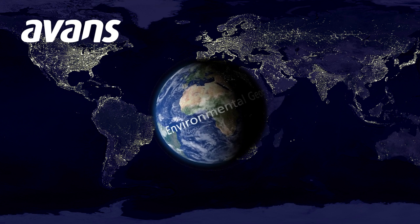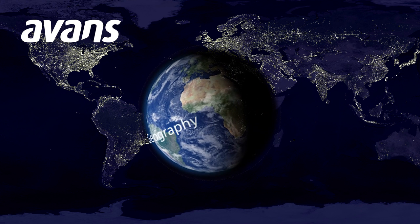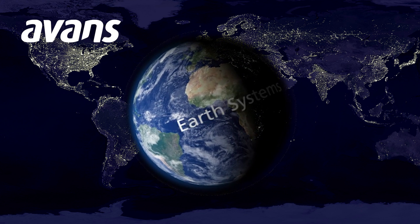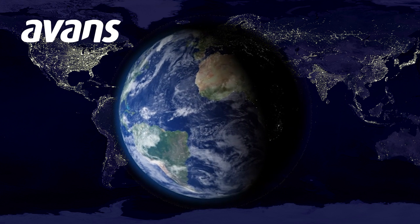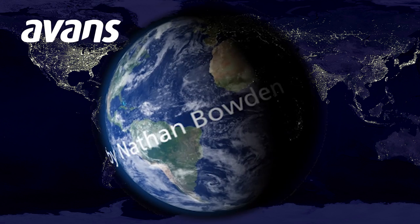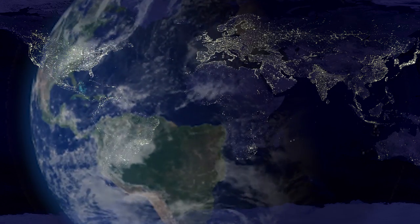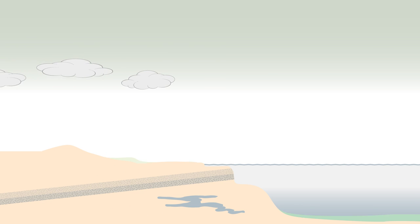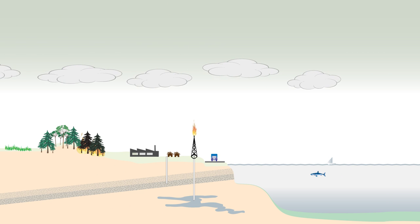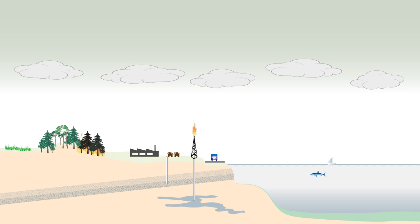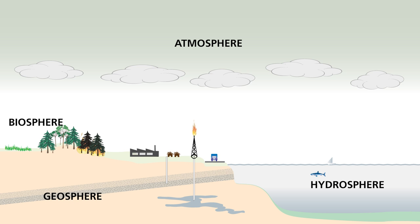This is the second module of the course on environmental geography. This module is on Earth systems, based on chapter 2 of your book. I'm Nathan Bowden, your lecturer for this module. In the first module you were first introduced to the different spheres: the geosphere, the hydrosphere, the atmosphere, and lastly the biosphere. In this lecture we will go into more details on these four spheres and where they came from.